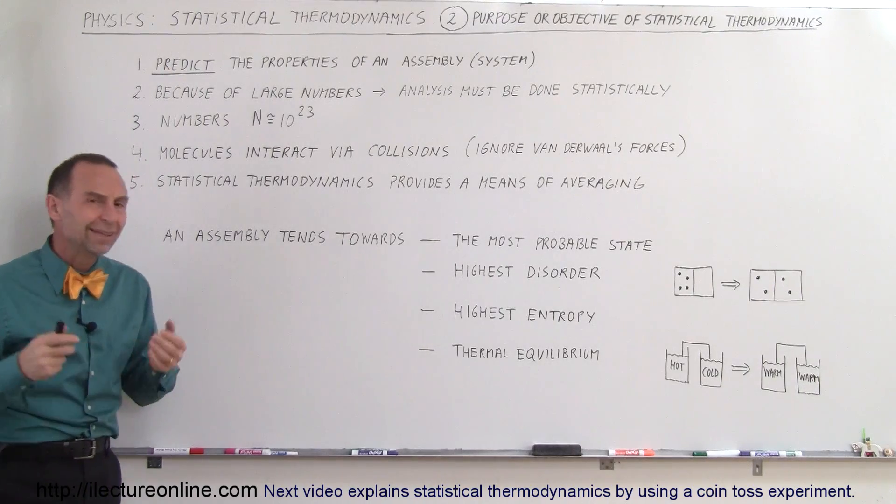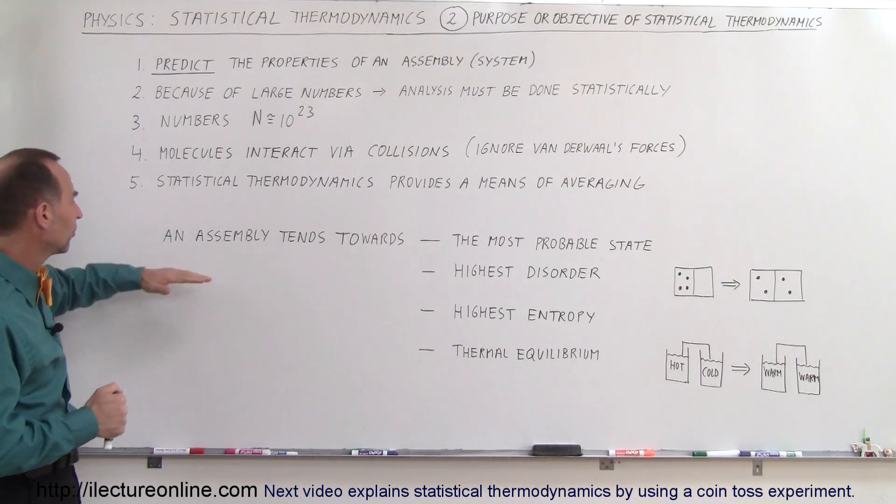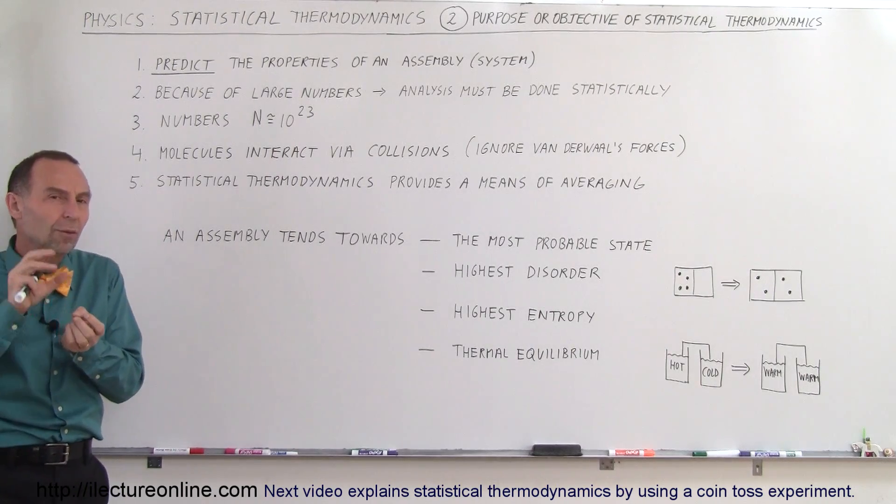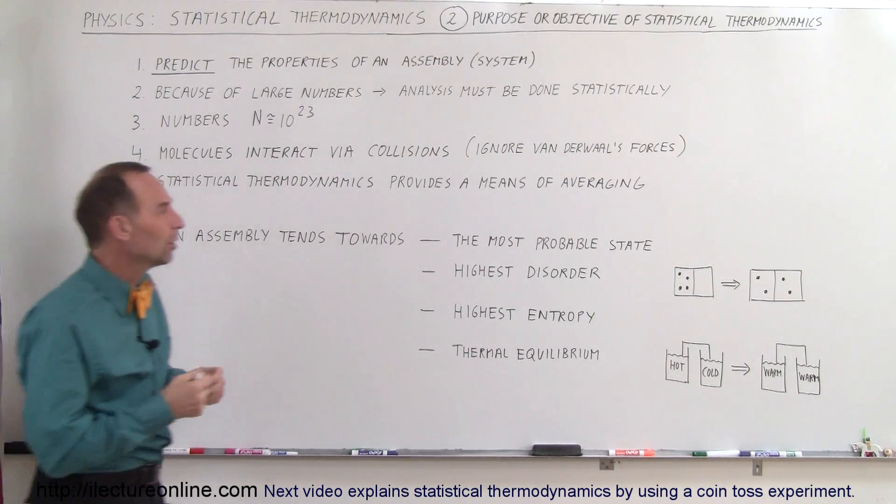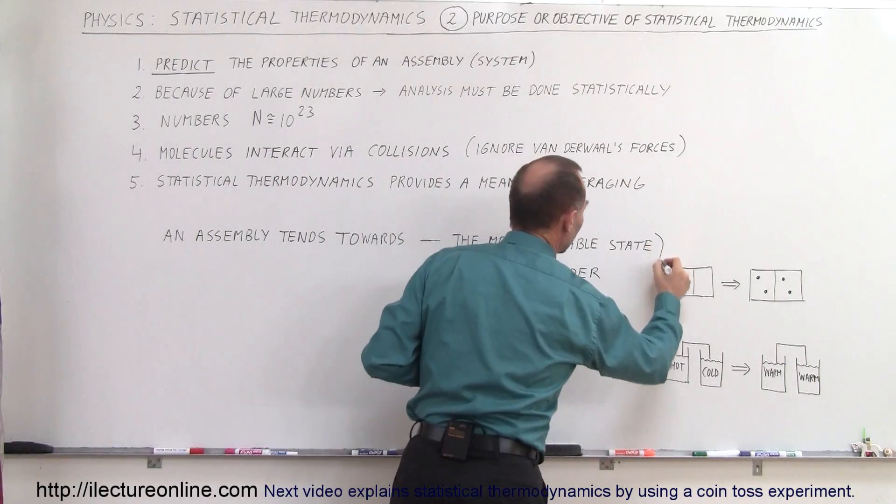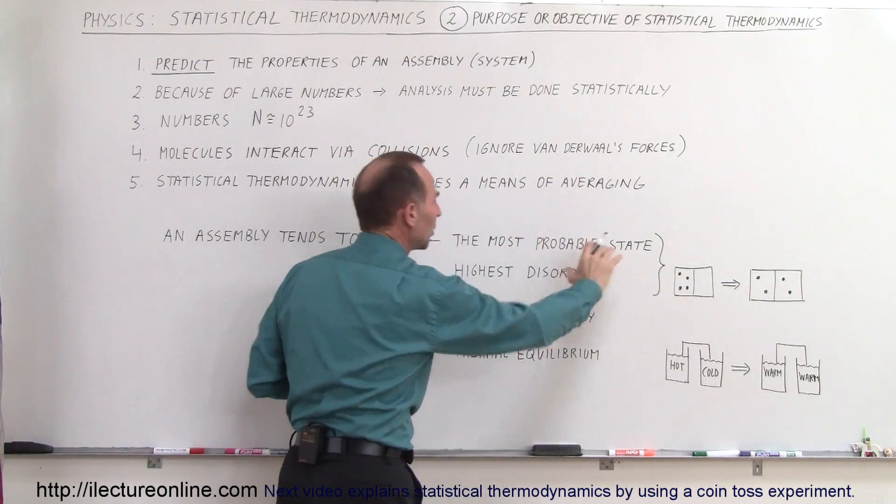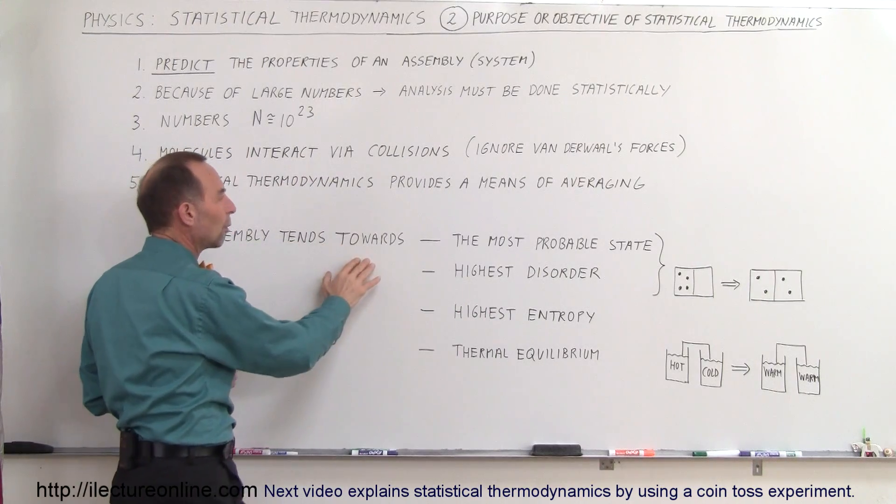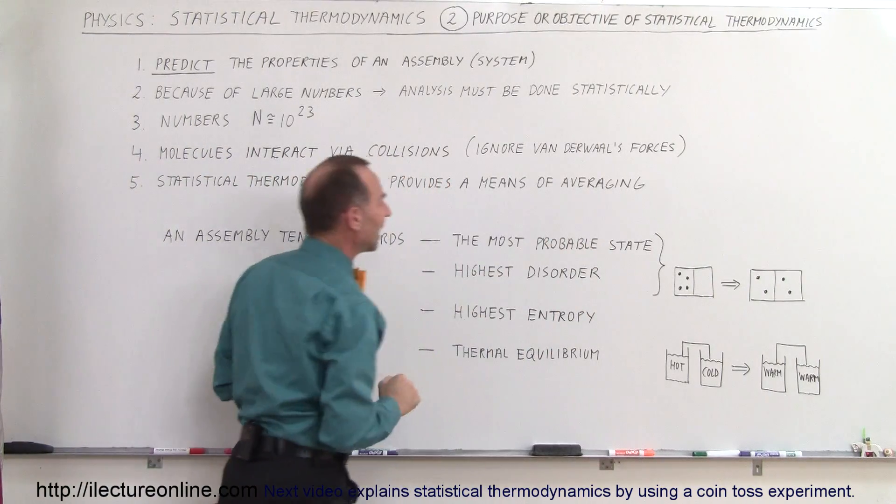So let me show you some simple examples of how this happens. Let's say we have an assembly. In the assembly, we tend towards some state. So what we can do is if we combine these two together, here we have kind of the theoretical explanation that assemblies, they tend towards what we'd call the most probable state.